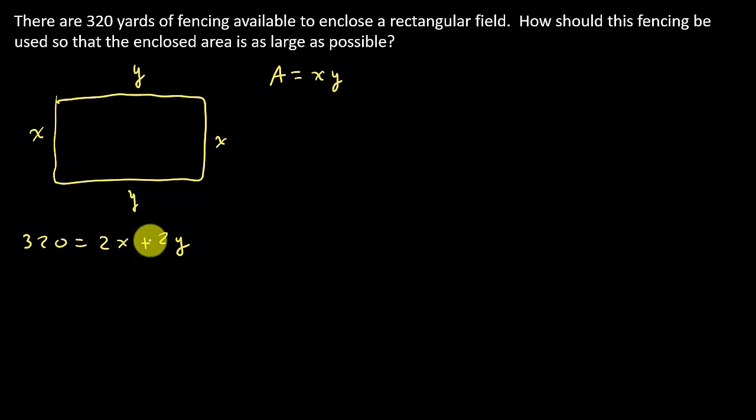Well, what I can do is this right here, this 320 equals 2x plus 2y, I can actually solve this thing for y. So that gives me 320 minus 2x equals 2y. And so if I divide by 2, I get y equals 160 minus x.